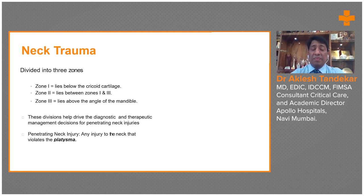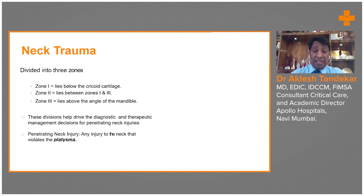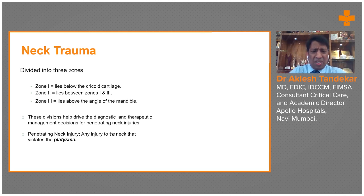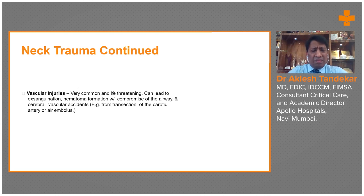Injuries below the cricoid cartilage will lead to cervical spine injury, and grievous injuries to the cervical spine can lead to quadriplegia. Injuries above zone three will lead to brain damage, so this zone assessment gives enough idea about the severity of the injury. Neck trauma is basically associated with vascular injury — there are important vascular structures right from the carotid artery to the jugular veins.